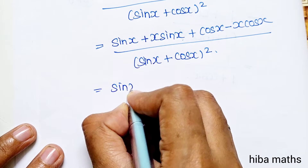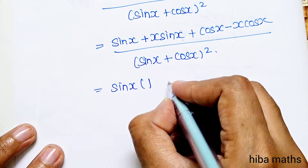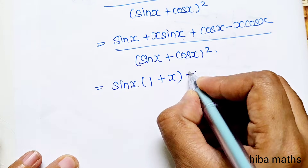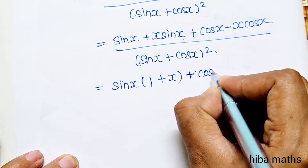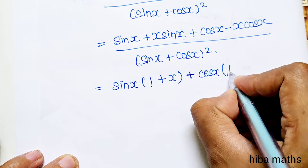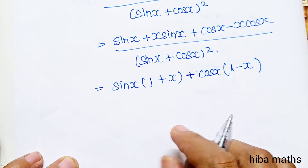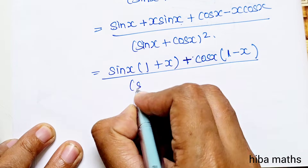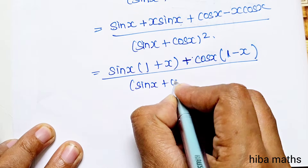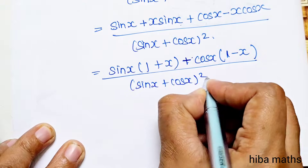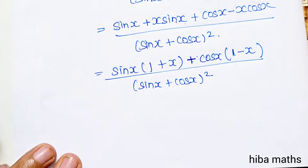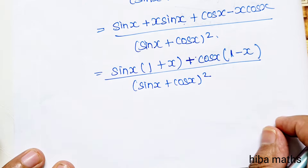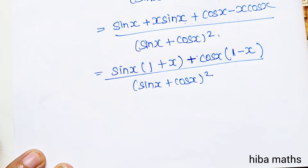Taking sin x out — here sin x is a common factor with x. For the cos x group, taking cos x out gives (1 minus x). So the final answer is: sin x (x plus 1) ... wait, regrouping: (sin x plus x·sin x) plus (cos x minus x·cos x), divided by (sin x plus cos x) whole square. This matches the textbook answer.